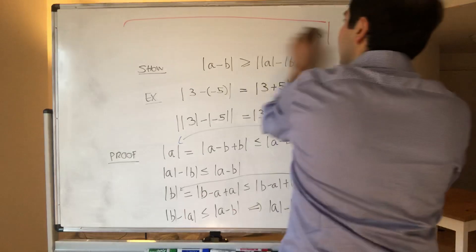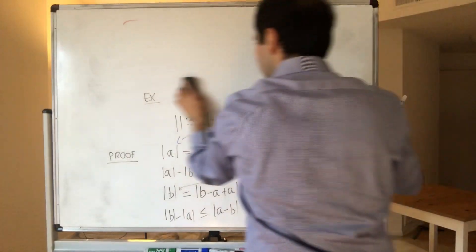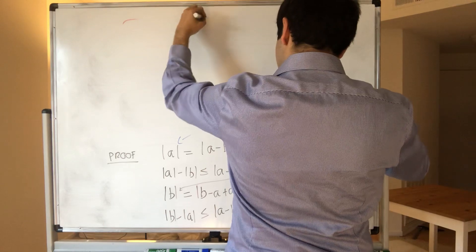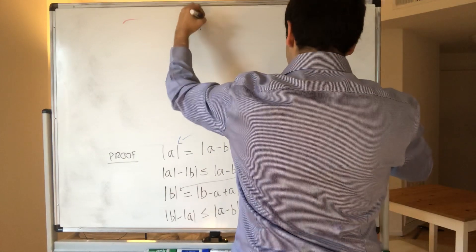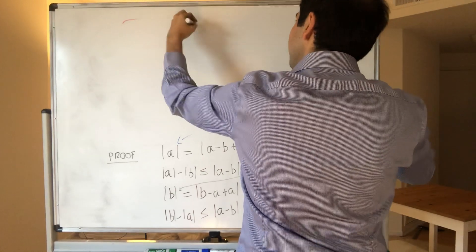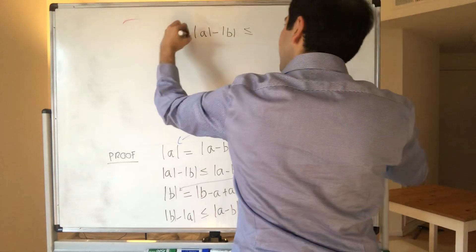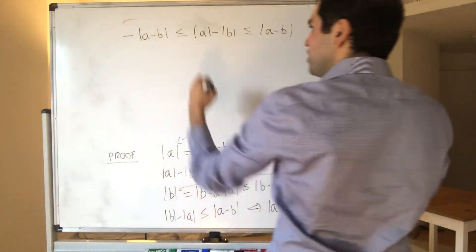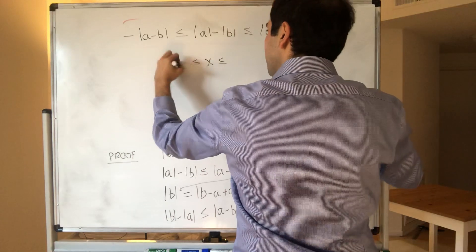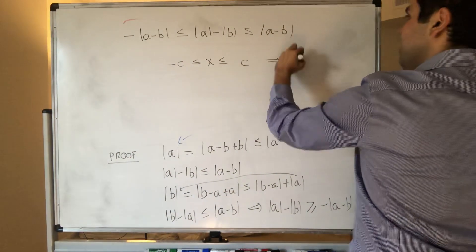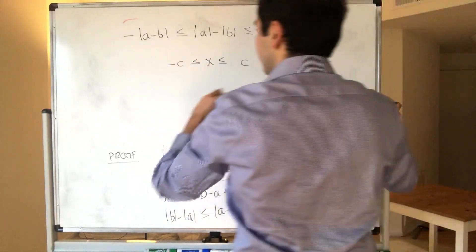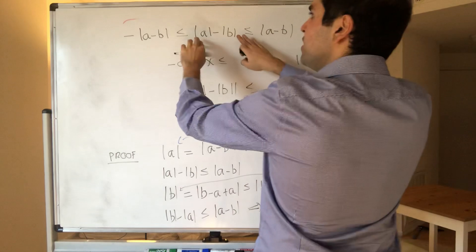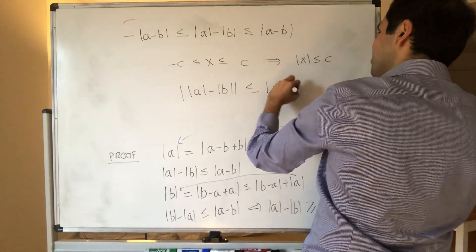Therefore, the quantity absolute value of a minus absolute value of b is squeezed between minus absolute value of a minus b and absolute value of a minus b. This is like saying x is squeezed between minus c and c, which implies that absolute value of x is less than or equal to c. So in other words, this implies precisely the reverse triangle inequality: if you take the absolute value of this side, it becomes less than or equal to this positive quantity.